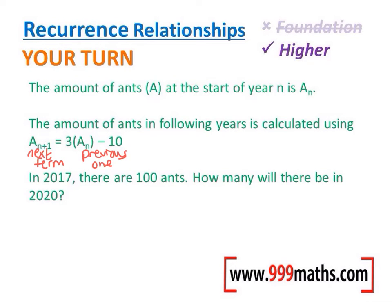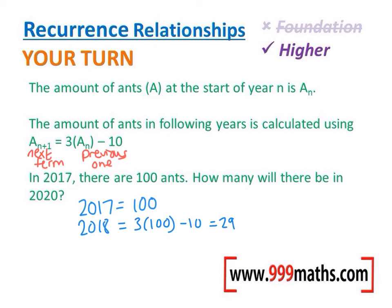In 2017 there were 100. Let's start with that. So in 2018 the formula says 3 multiplied by the previous one minus 10. So it will be 3 multiplied by the previous term subtract 10. That's 290. Let's do 2019 now — 3 lots of the previous one and then subtract 10. Well that's going to give us 860.